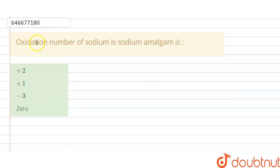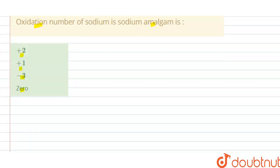Hello students, today our question is: oxidation number of sodium in sodium amalgam is - ABCD options are given here. We have to choose the correct option. The solution to this question is: